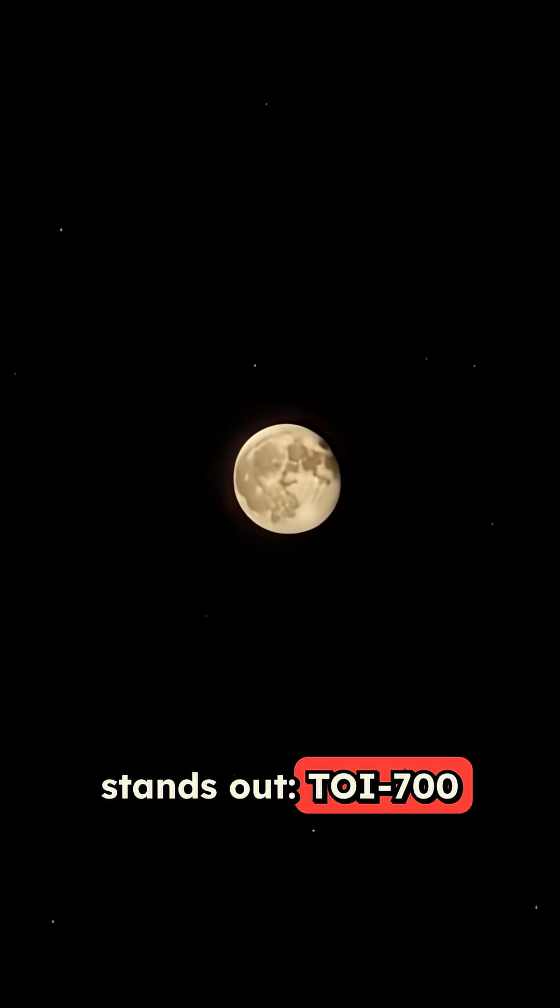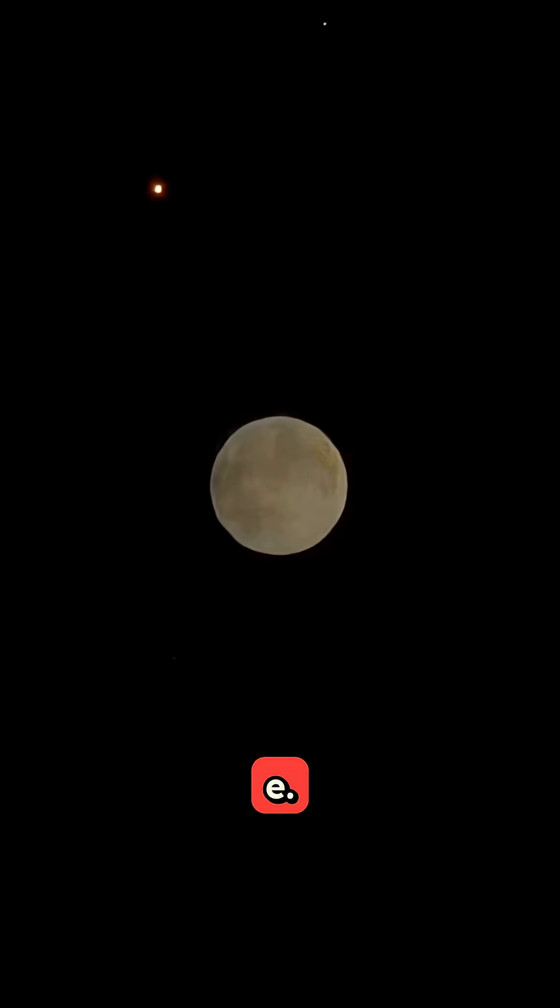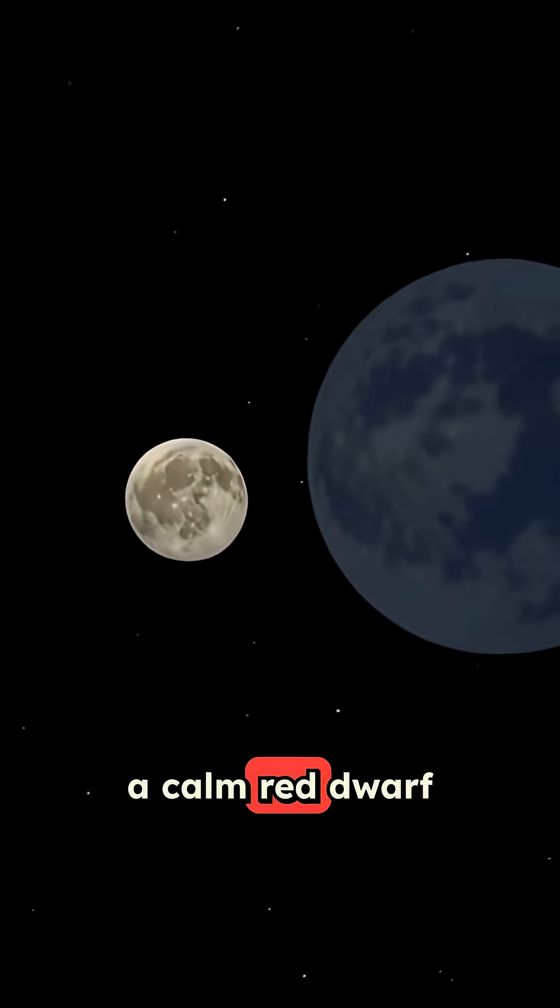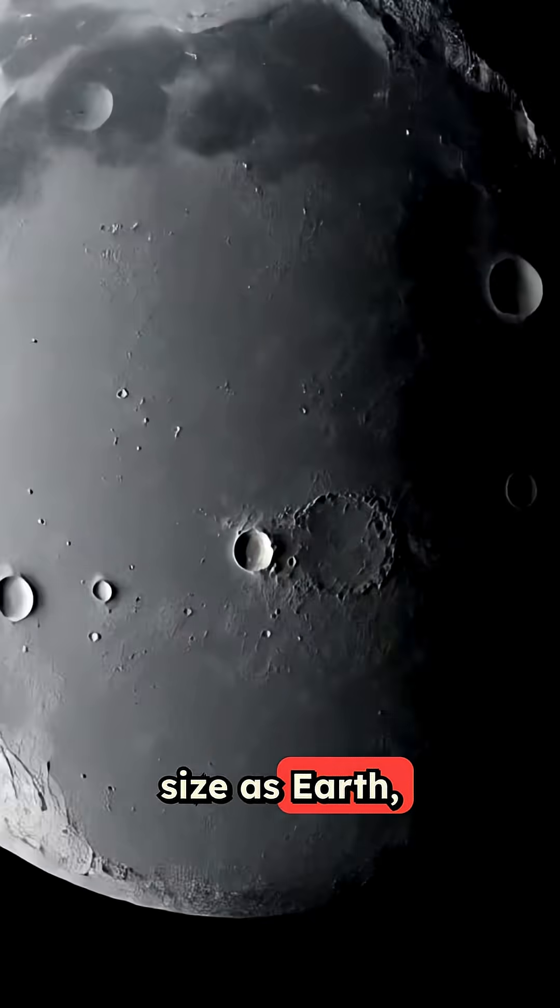And one of them stands out, TOI-700E, a rocky planet orbiting a calm red dwarf star, roughly the same size as Earth, and resting where liquid water could flow freely.